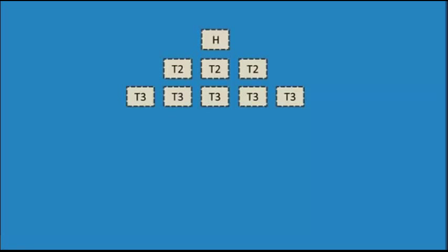When the spider comes for crawling the pages in your website, it usually starts from the home page. It then follows the links in the home page to go to the subsequent pages in tier two and tier three.